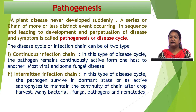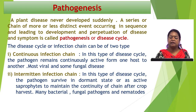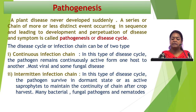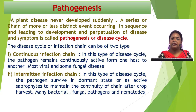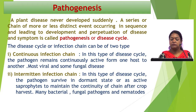The second one is intermittent infection chain. In this type of disease cycle, the pathogen survives in a dormant state or as active saprophytes to maintain the continuity of the chain after the harvesting of the crop. Many bacterial, fungal pathogens and nematodes come under the intermittent infection chain.